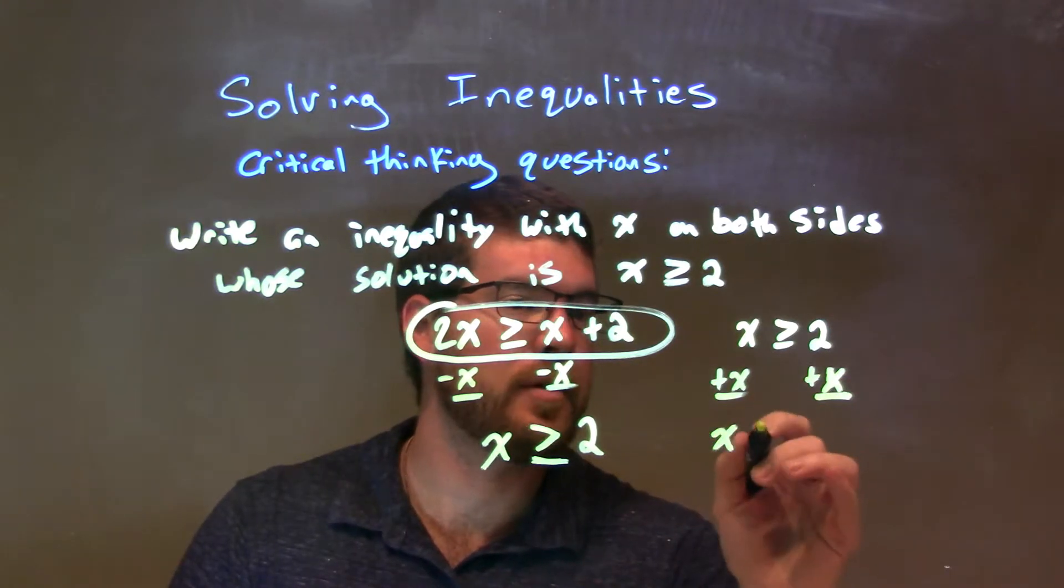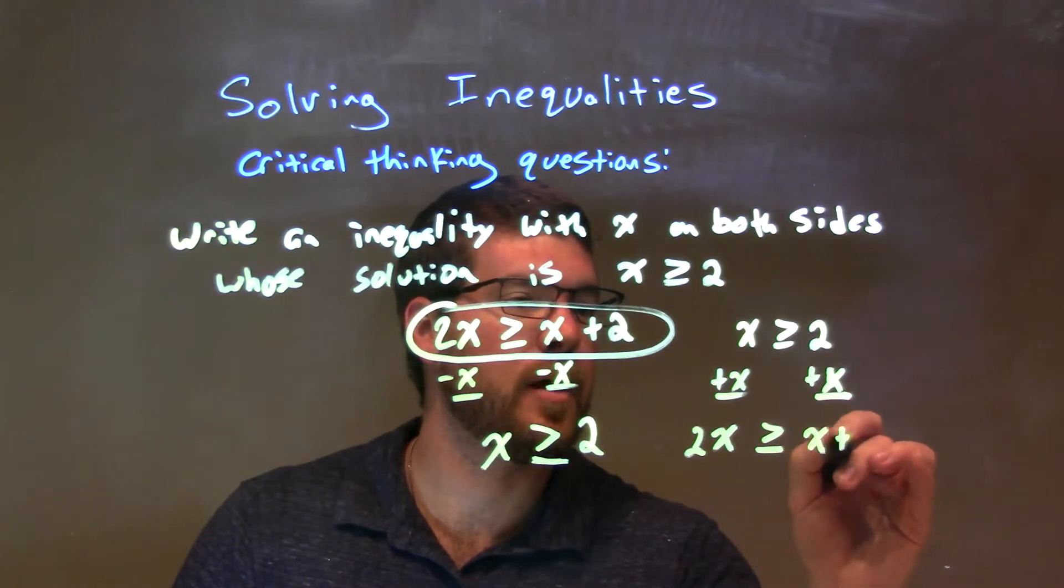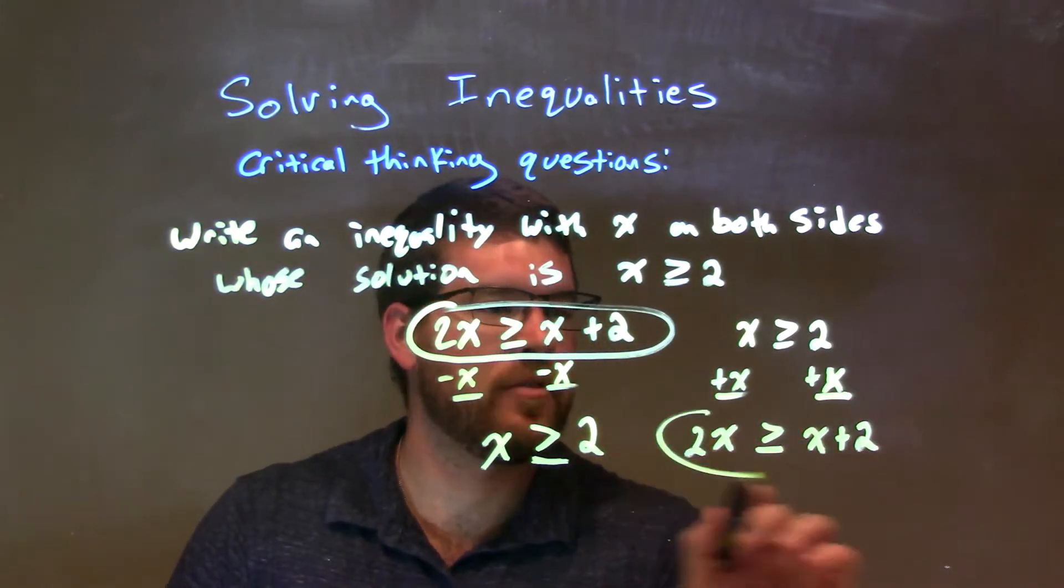So, now we're left with 2x, right? x plus x is 2x is greater than or equal to x plus 2, right there.